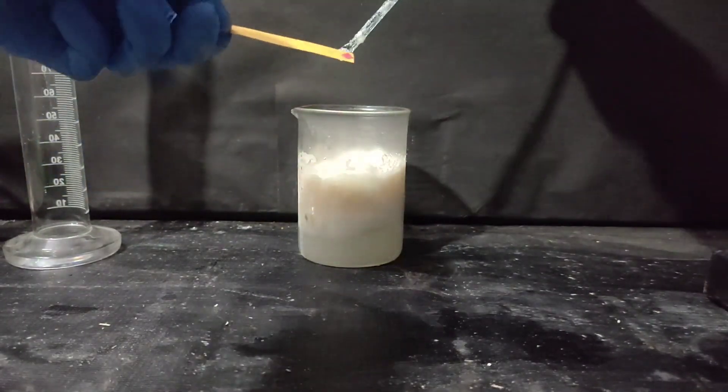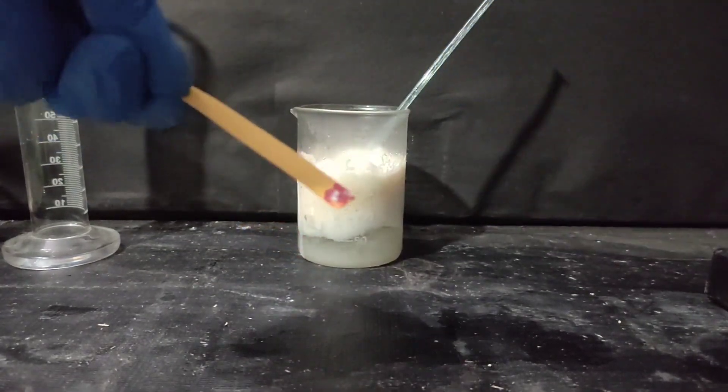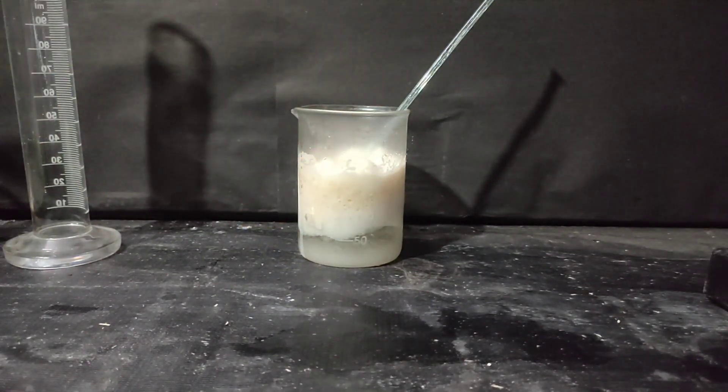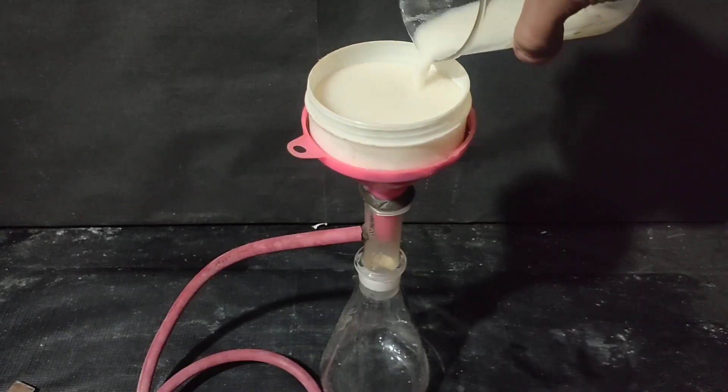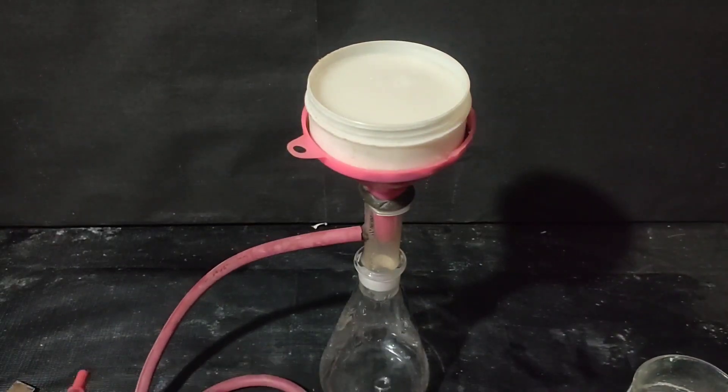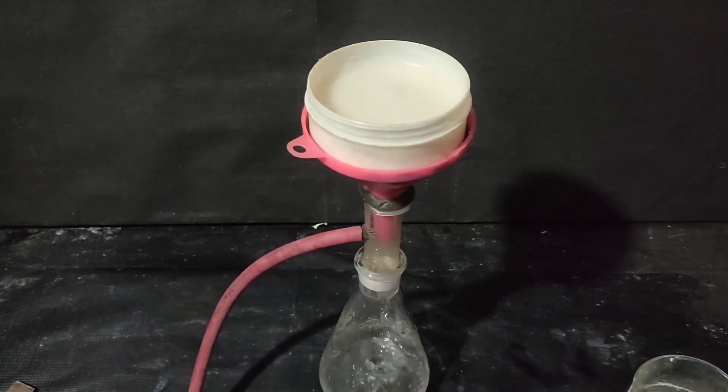The solution was hot so it was cooled first and then the precipitate of benzoic acid was filtered off using vacuum filtration by my DIY Buchner funnel and vacuum pump.